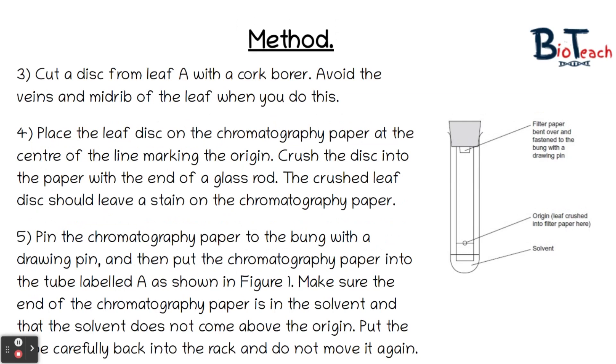You will cut a disc from whichever your leaf A is with a cork borer. You need to avoid the veins and the midrib of the leaf when you do this because there's very little chlorophyll in those areas, so try and do the actual leafy part of the leaf. If you place the leaf disc on the chromatography paper at the centre of the line marking the origin, you can crush the disc onto the paper with the end of a glass rod. The crushed leaf should leave a stain on the chromatography paper. Alternatively, you may want to crush the leaf itself in a pestle and mortar with some solvent and then spot the pigment onto the chromatography origin line.